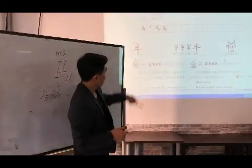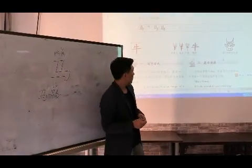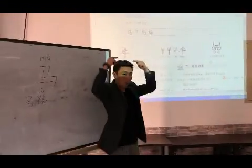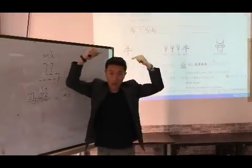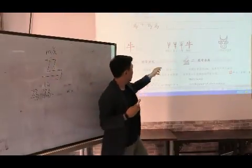All right, so let's go back to 牛. 牛 actually is still a picture, but look at this ancient form.